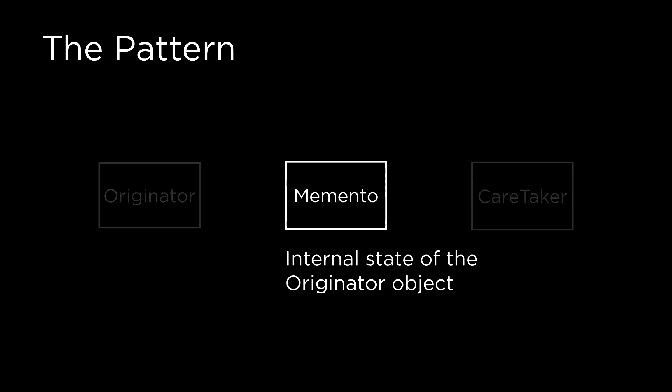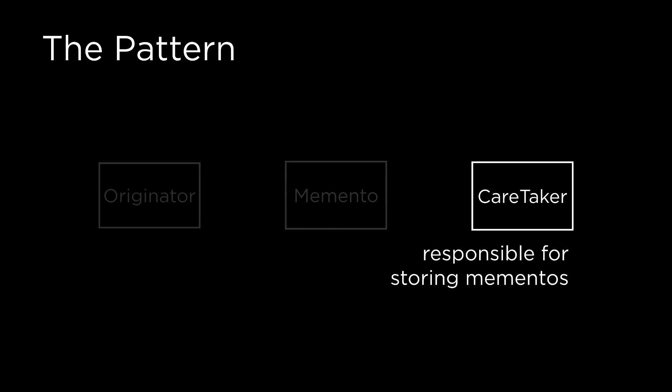The memento itself is just the state that we extracted from the component. We want to take it out of the component so we can save it somewhere and restore it later. We're going to save it in an object called caretaker. You don't need to use the original names, but since we're here to learn about antique design patterns, let's use them. The caretaker is just like a cache object.